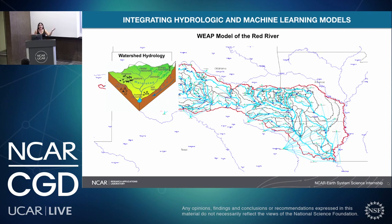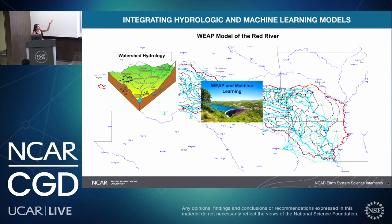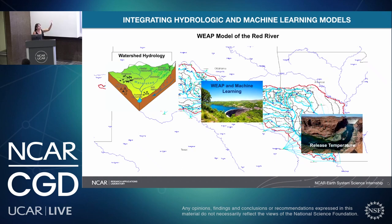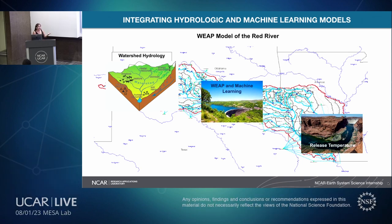So we have the hydrology — the watershed hydrology — and we want to join it with machine learning. We are going to combine these two to find the release temperatures for the reservoirs, shown as green dots. The main goal is: hydrology plus machine learning combined, creating a new variable in the WEAP system.